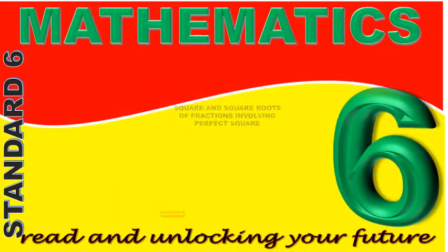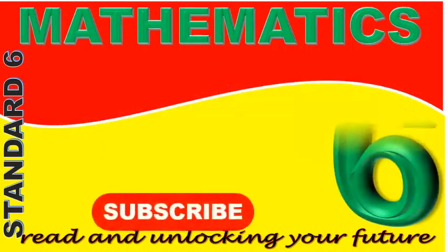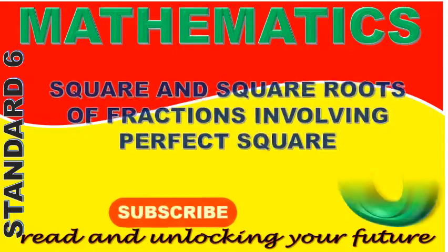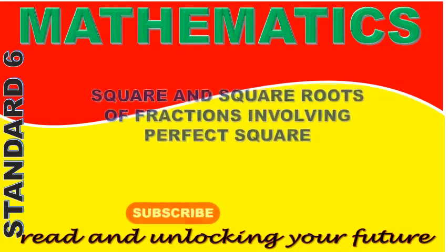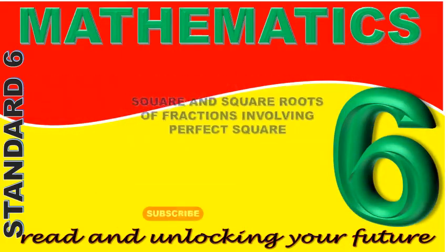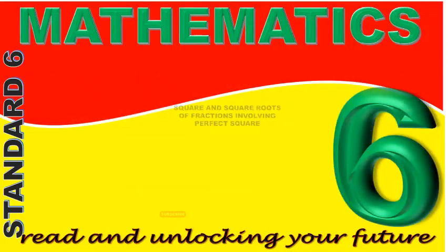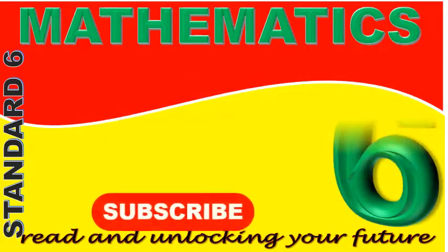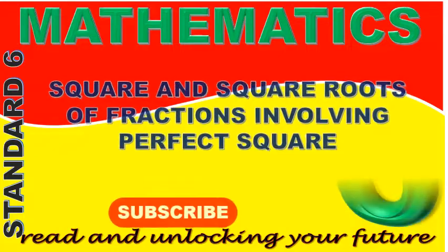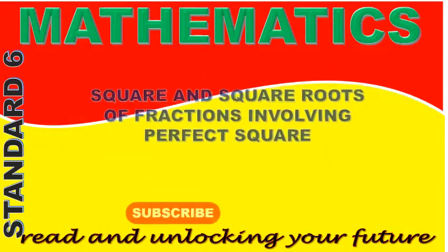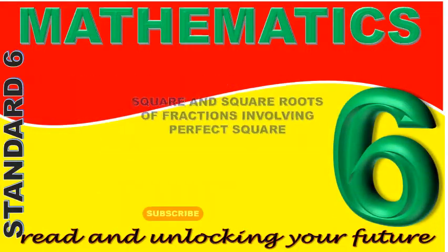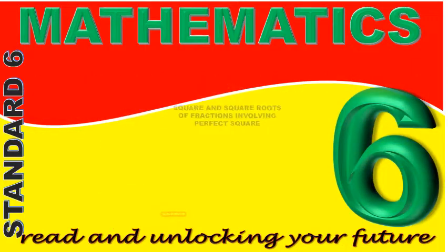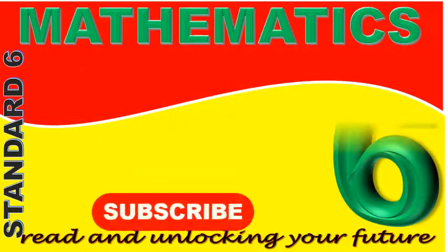Class, what is the square of 1 and a third? Give the answer to your teacher now. Mary, what is the square of 1 and a third? The square of 1 and a third is 4 thirds multiplied by 4 thirds, which is equal to 16 ninths, or 16 out of 9. That is correct, Mary. Class, I hope you got 16 ninths as your answer. To get the square of 1 and a third, rewrite 1 and a third as an improper fraction, which is 4 thirds. Then multiply 4 thirds by 4 thirds to give you 16 ninths, that is 16 out of 9.